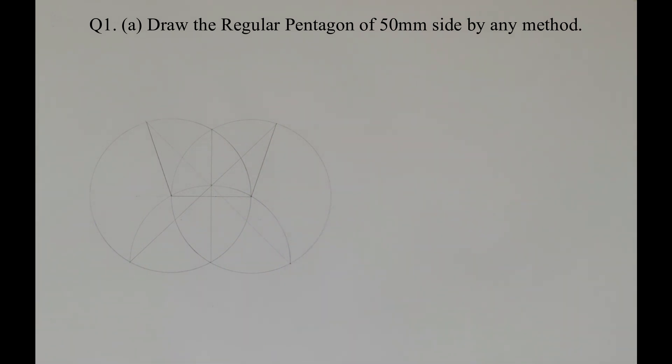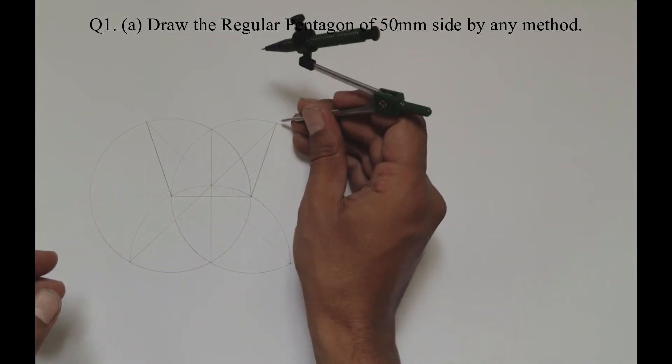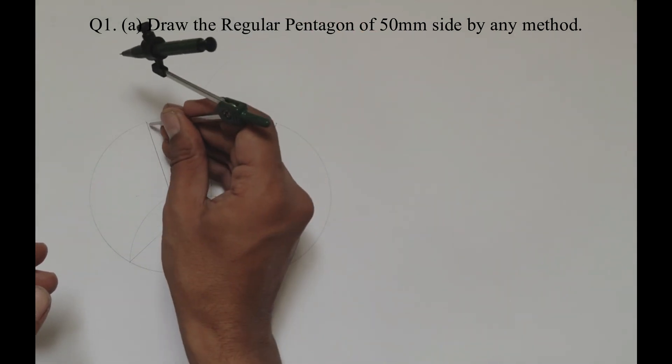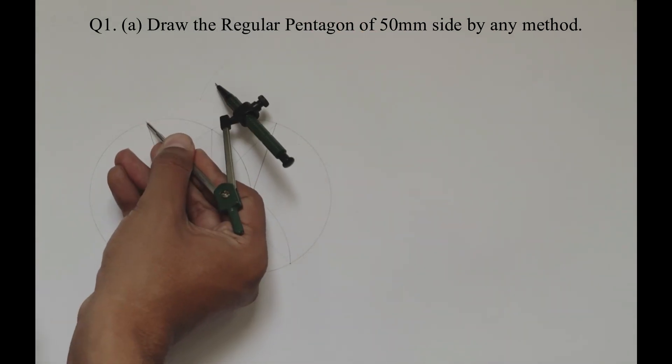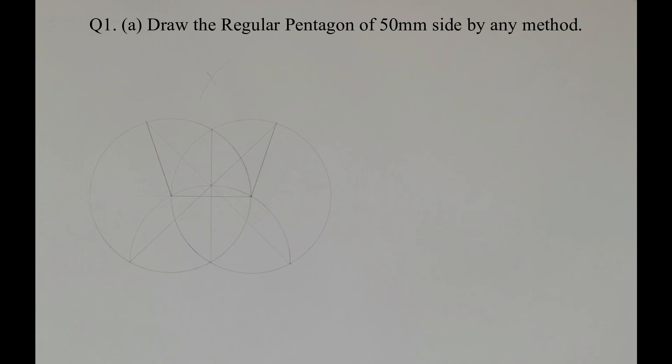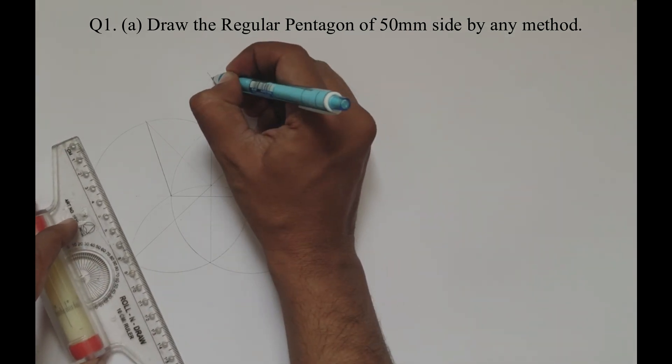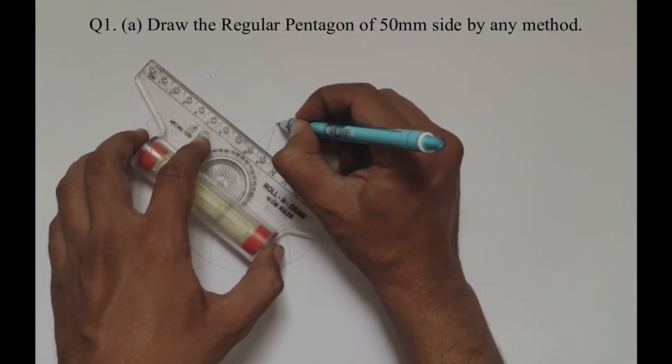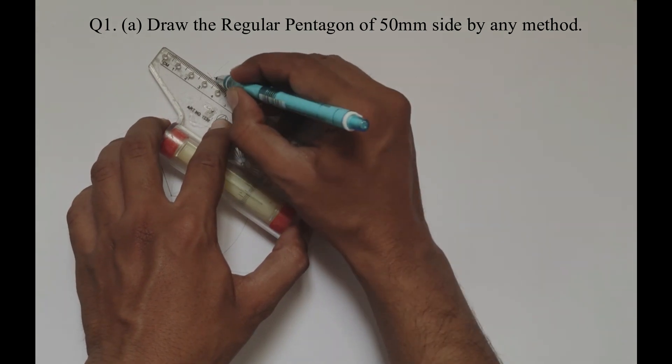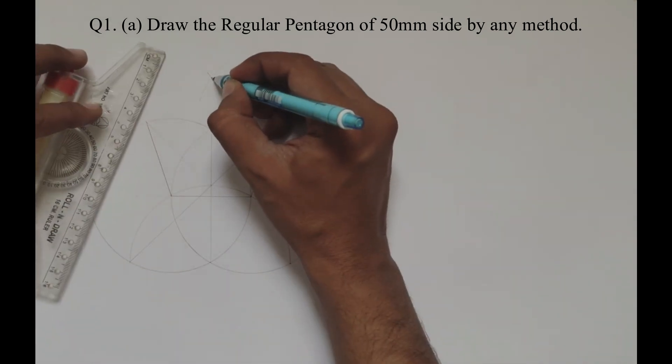Now taking compass again with the same radius 50mm, draw two intersecting arcs using the new two points, and by joining these two points we can complete our pentagon.